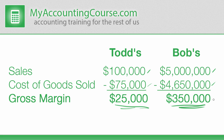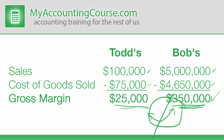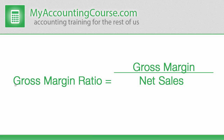Based on the gross margin alone, you'd assume that Bob's store is doing a lot better than Todd's — Bob has a three hundred fifty thousand dollar gross margin where Todd only has twenty-five thousand. But you can't compare the two gross margins together, and that's where the gross margin ratio comes into play.